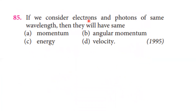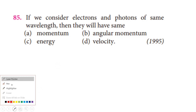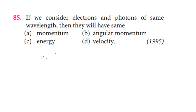If we consider electrons and photons of the same wavelength, then since momentum equals h divided by lambda, if the wavelength is the same for both, then the momentum is also the same. So they will have the same momentum.